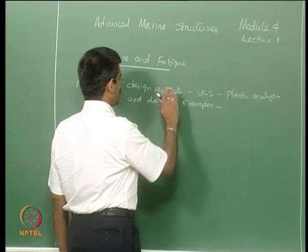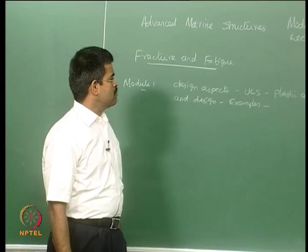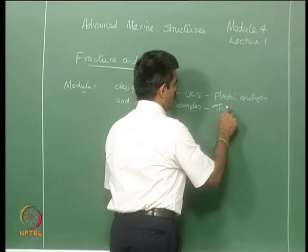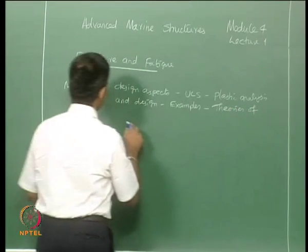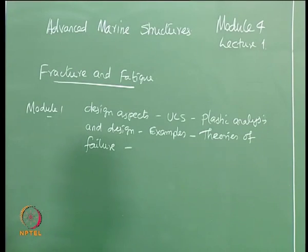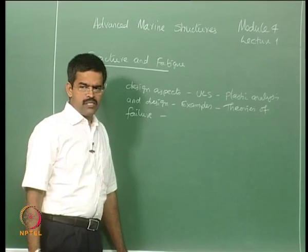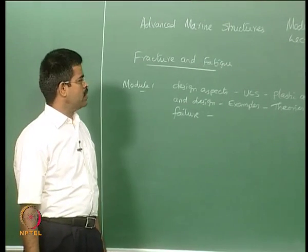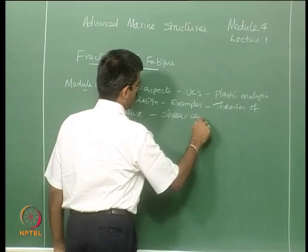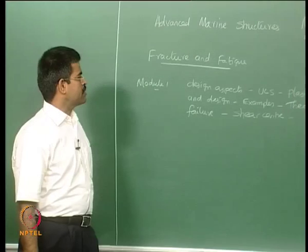We understood that the whole plastic analysis and design circumscribes around the yield value of the stress, but finding out the yield point in a given failure phenomenon is complex. We understood some basics about the theories of failure, and we saw there are discrepancies between different theories of failure, at least in the second and fourth quadrant, because some theories say that even though the stress has reached the yield point, failure does not occur. Then we spoke about shear center — how to evaluate it and its importance in advanced design philosophies applied to marine structures.